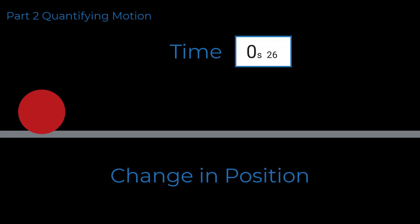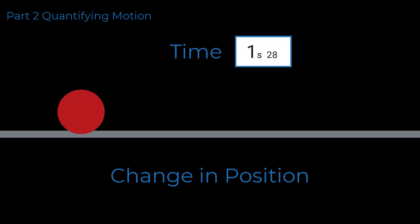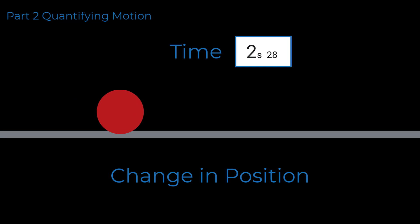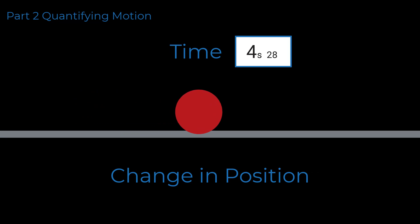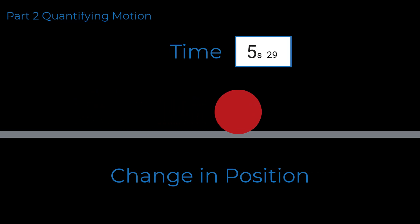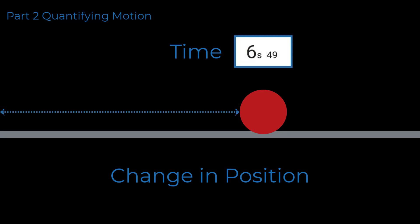There could be many different measurements you could use to determine the motion of the red ball, but two factors must be considered: time and change in position. Measuring time tells us the length of time the red ball was in motion. Measuring the change in position tells us how far the red ball has moved for the length of time recorded. We will now use measurements of time and change in position to quantify the motion of the red ball.